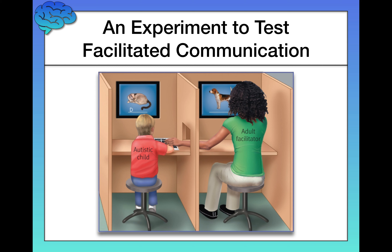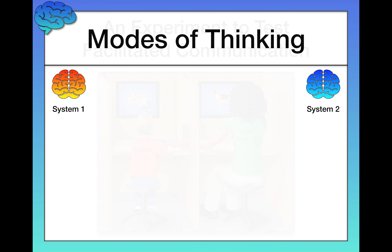The results weren't reflecting the children's thoughts at all — instead they were reflecting the facilitator's thoughts. This was really discouraging at the time because it debunked facilitated communication altogether. But ultimately it was a really good thing, because imagine how much time, money, and manpower we would have wasted had we not done this study. Now we can focus our attention and research on finding different ways to help children with autism that are actually effective.